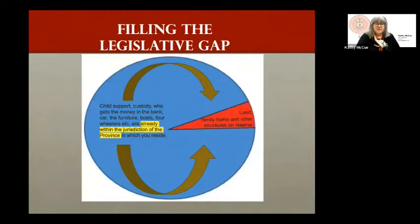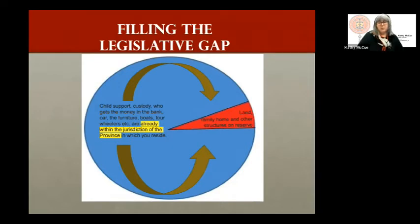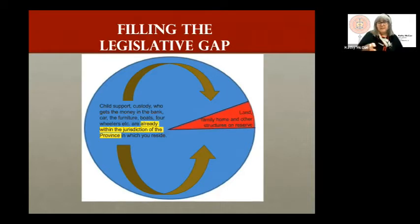Looking at the legislative gap diagram: everything in the blue portion is already within the jurisdiction of the province — provincial family law will help settle issues related to child support, custody, money in the bank, cars, furniture, boats, all movable assets. The tiny sliver of red is really all that FORMIRA deals with — that's the land, family home, and any other structures located on the reserve.